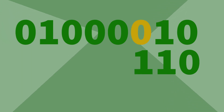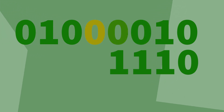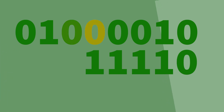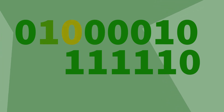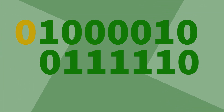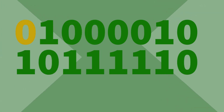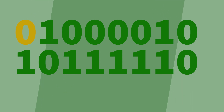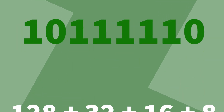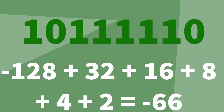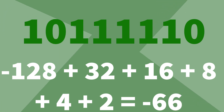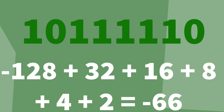This 0 becomes 1. This 0 becomes 1. This 0 becomes 1. This 0 becomes 1. This 0 becomes 1. This 1 becomes 0. And this 0 becomes 1. Now, if we convert this number to denary, we're doing minus 128 plus 32 plus 16 plus 8 plus 4 plus 2, giving us minus 66.